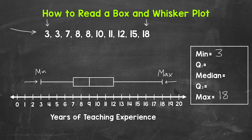Now that we covered the minimum and maximum, we're going to move to the middle and take a look at this line right here inside the rectangle. That line represents the median. The median is the middle point of the data — the halfway point or the 50th percentile. The median is also referred to as the second quartile. Since we have 10 numbers within the data set, the halfway point is going to be in between the 8 and the 10. We take the average of those two numbers to find the median: 8 plus 10 divided by 2 equals 9. So the median is 9.